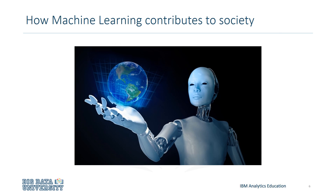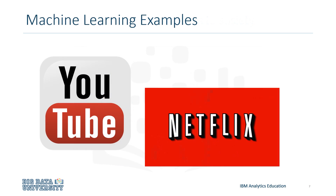Machine learning impacts society in a very influential way. Here are some real-life examples. How do you think Netflix and YouTube recommend videos, movies, and TV shows to their users? They use machine learning to produce suggestions that you might enjoy. This is similar to how your friends might recommend a show to you based on other shows you've watched.